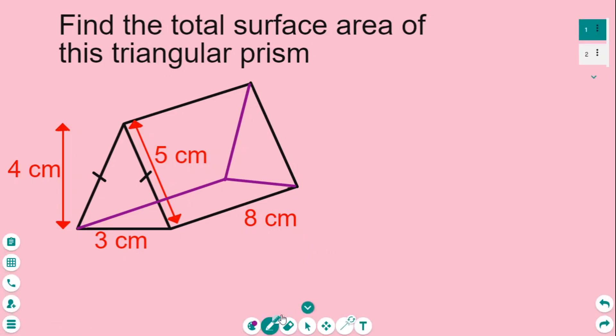Now it's clearly visible, the faces of this triangular prism. You can see we have a triangle here in the front, another triangle here at the back.